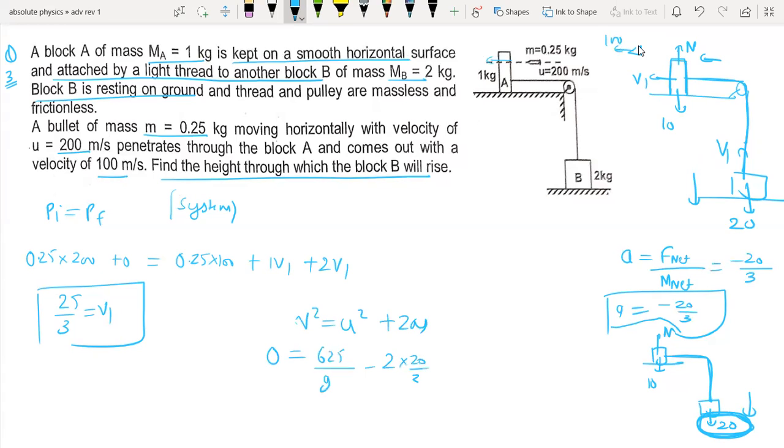So v squared equals 625 upon 9 into 2 times a times s. This gives s equal to 625 upon 3 times 2 times 10, which is equal to something like 5.2 meters.